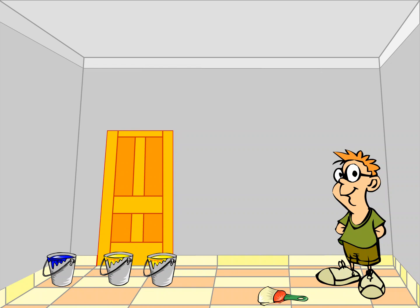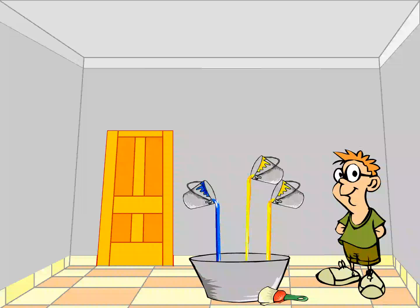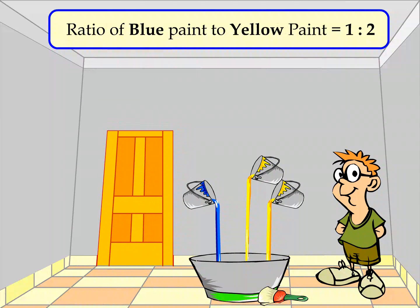Jack decided to paint his room. In order to get his favorite green color, he decided to first mix one bucket of blue paint with two buckets of yellow paint. We say that Jack mixed blue and yellow paints in the ratio 1 is to 2, or yellow and blue paints in the ratio 2 is to 1. This simply means that he mixed one part of blue paint to two parts of yellow paint.